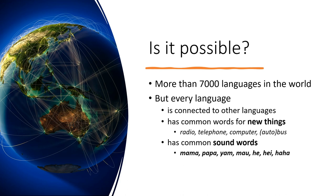And they are actually part of Pandunia. So mama, papa, jam, mau, haha — they are just ordinary words in Pandunia. You can form sentences with these words. You can say mama jam — mama is eating. Mau jam — the cat is eating. Papa haha — father is laughing.